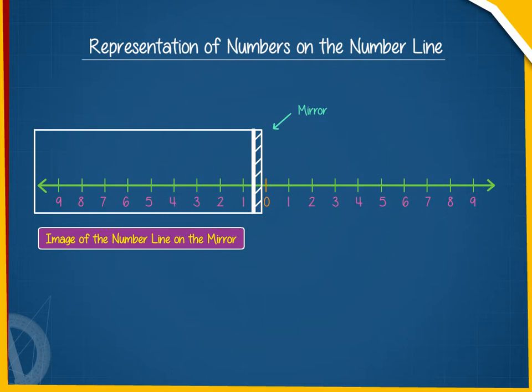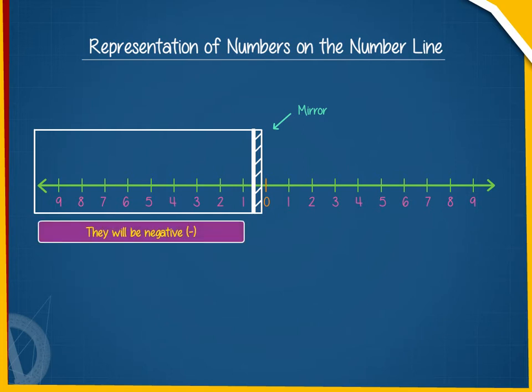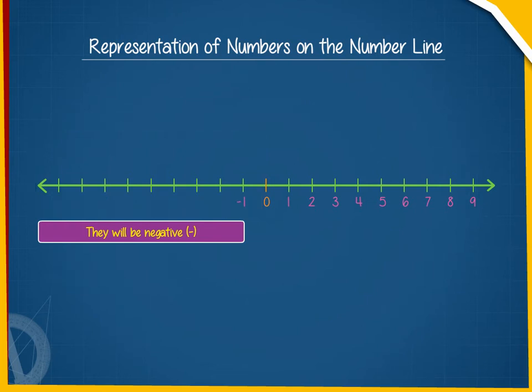Since the numbers in the image are directed towards the left side, they will be negative or minus 1, minus 2, minus 3 and so on.